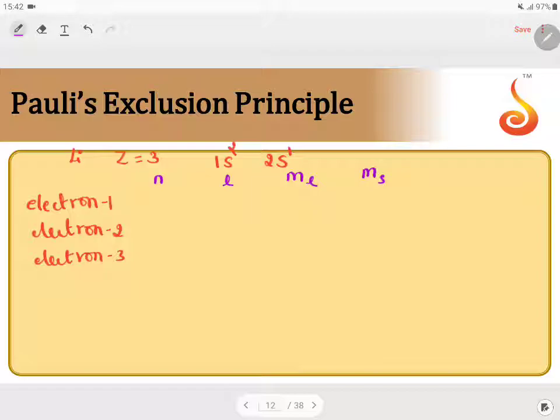If you consider 1s, this 1 stands for principal quantum number, meaning for the first two electrons, the principal quantum number is 1 and 1. If you consider s-subshell, the L value for s-subshell will be 0.